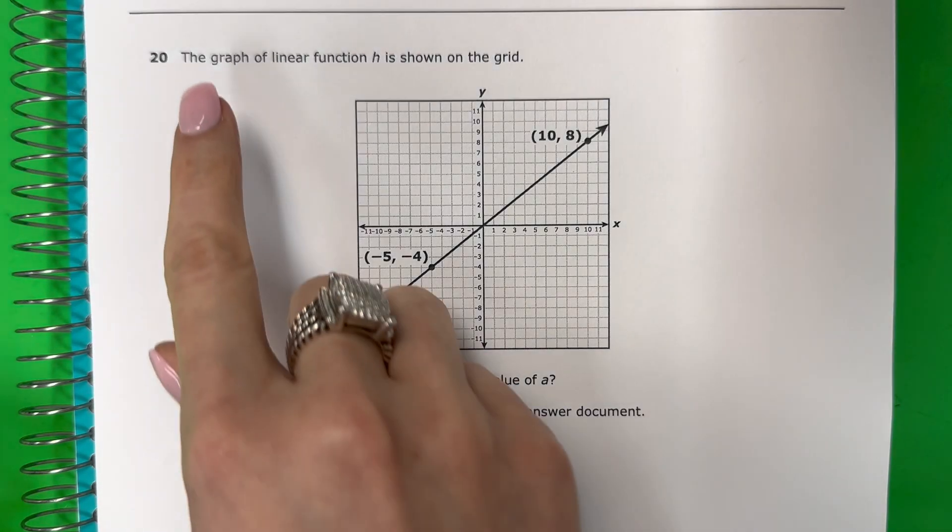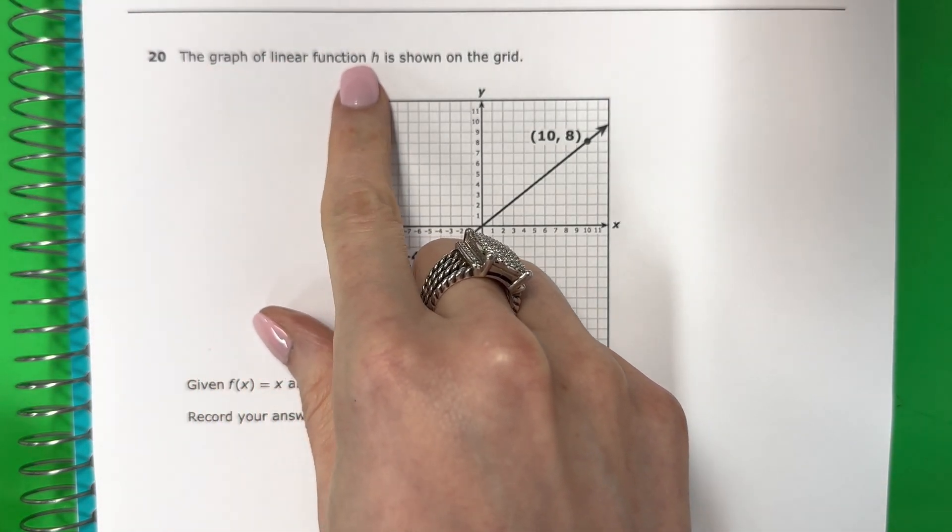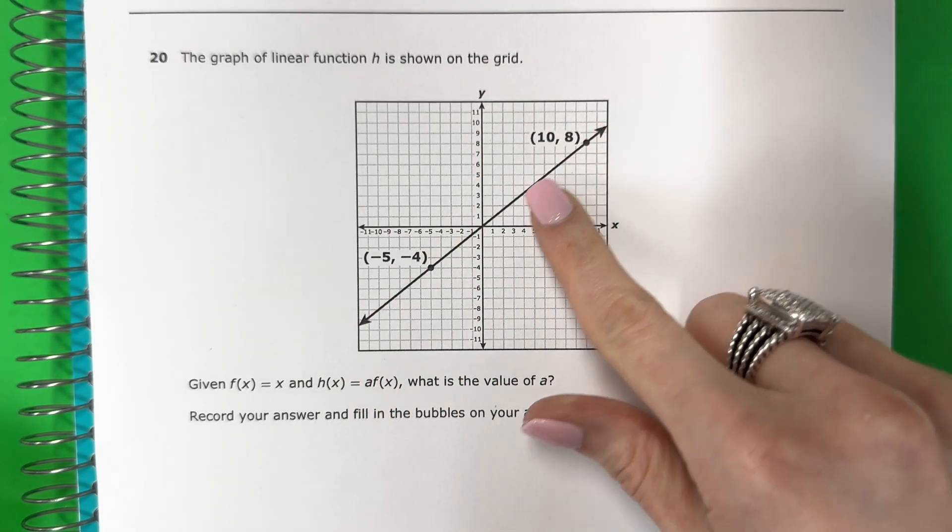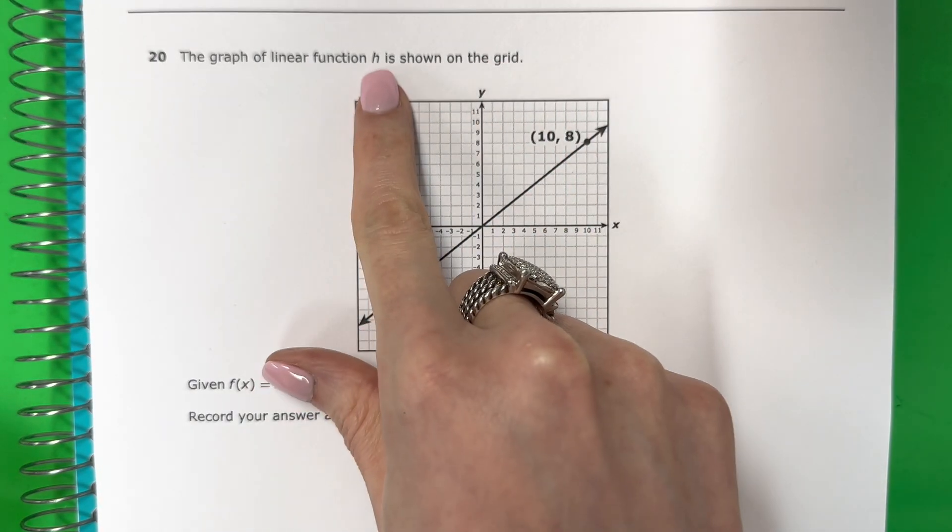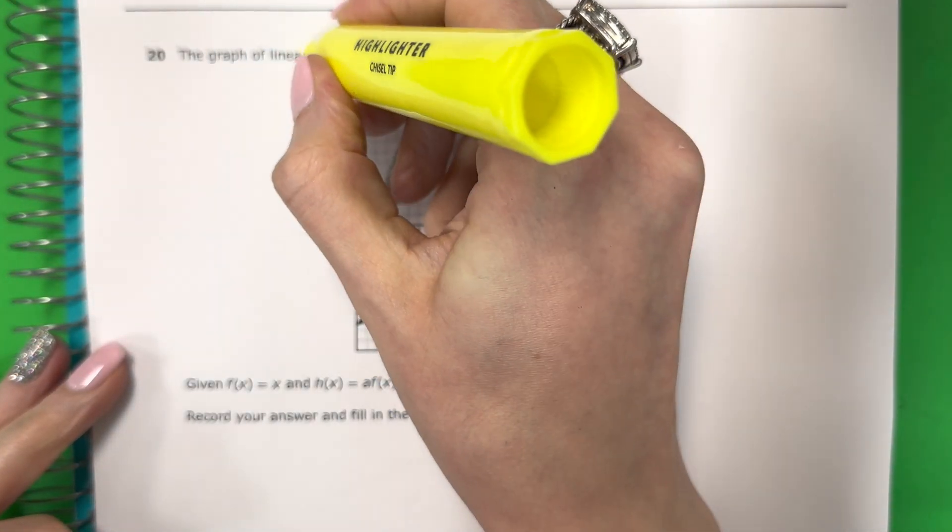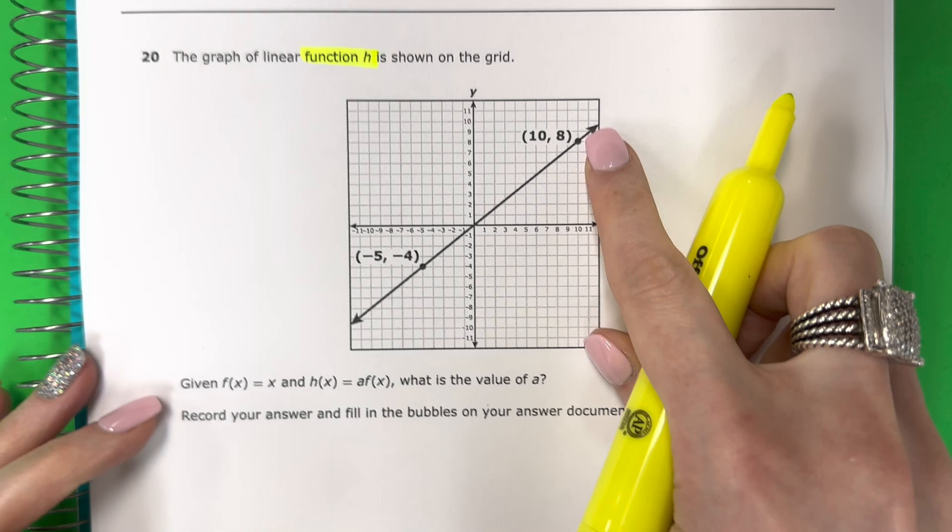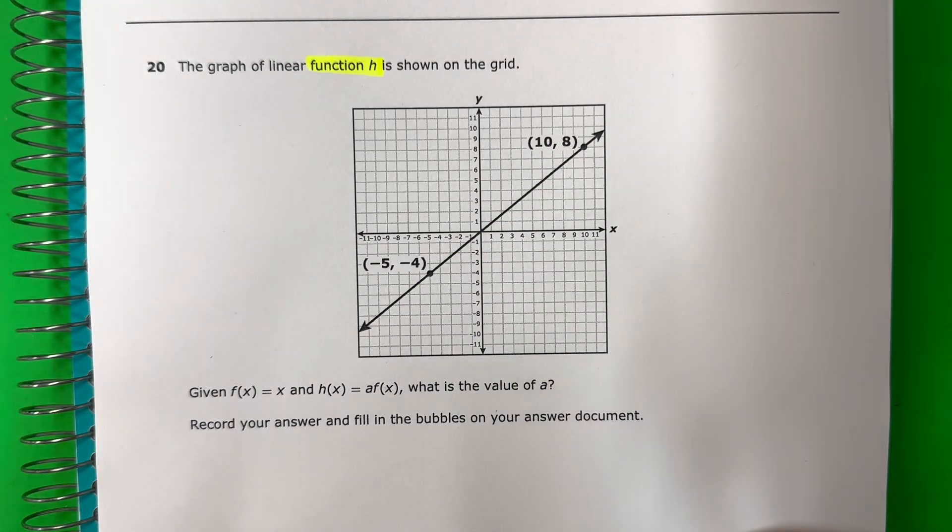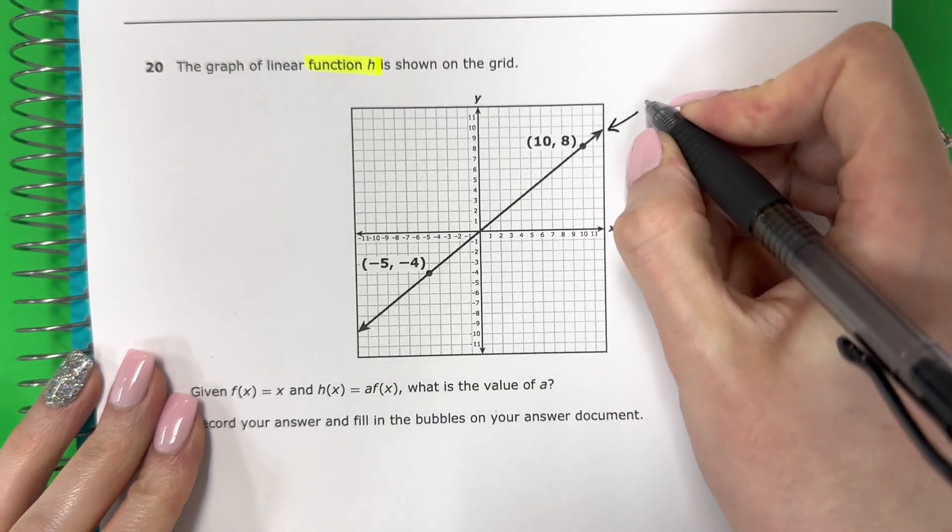Question 20. The graph of linear function h is shown on the grid. Okay, so guys, this line right here is function h. That's the name of this line. Alright, so esta línea se llama h. I'm going to go ahead and write that down. Voy a escribirlo. This is h.